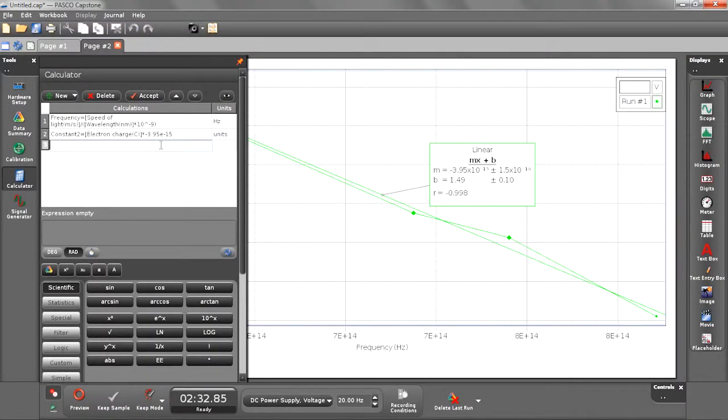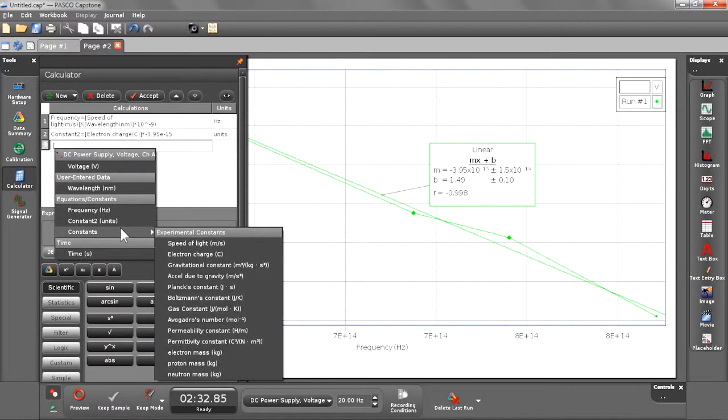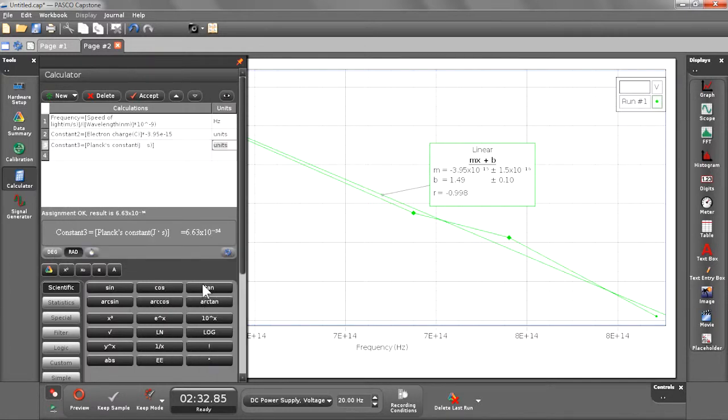How close are we? Well we can go ahead and bring up Planck's constant if we need to to compare. So we'll just create another expression that is Planck's constant and that's 6.63 times 10 to the negative 34. And as you can see we're pretty close we're about five percent off so seems to me that was a pretty successful experiment.